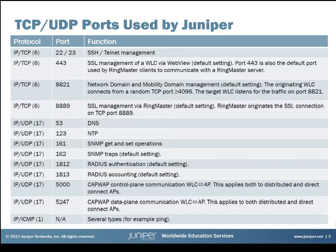Port 8821 is used for communication between controllers within a mobility domain or a network domain. And last but not least, port 8889, which is the default configured port for communication from Ringmaster towards the wireless LAN controller. However, this port can be configured as you like, and in the example I will show you that it is configured for 8890 and 8891.